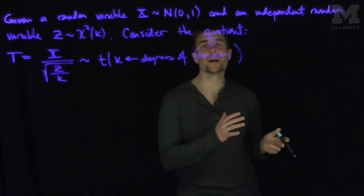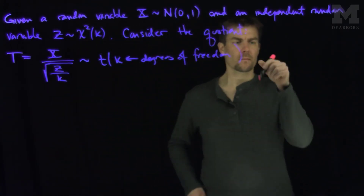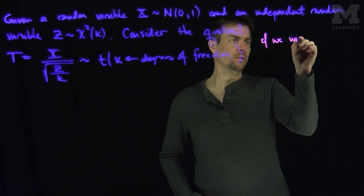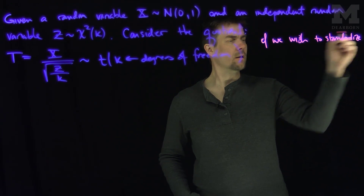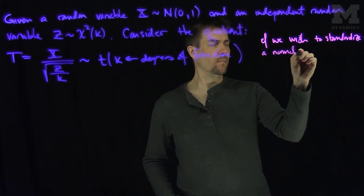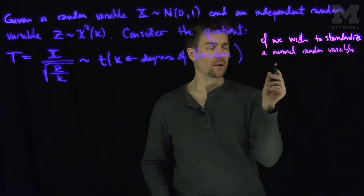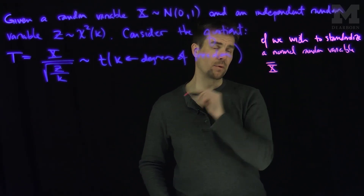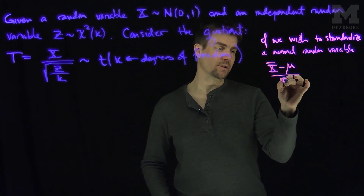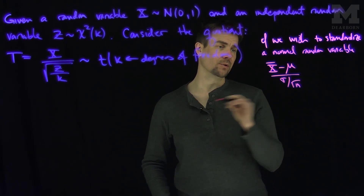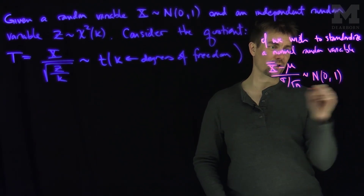Where do these t-distributions arise? Recall that if we want to standardize a normal random variable, what we can do is look at x̄, subtract off its mean mu, and divide by its standard deviation sigma over root n. This random variable will be normally distributed with mean 0 and standard deviation 1.